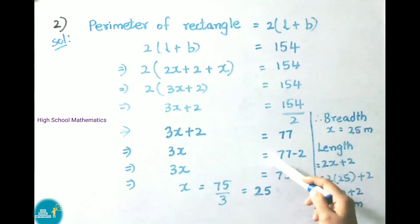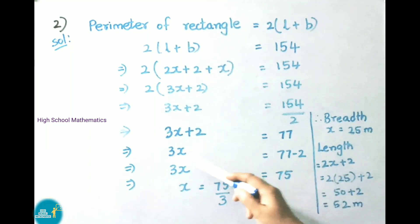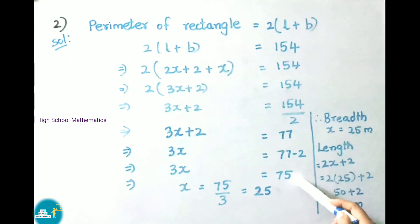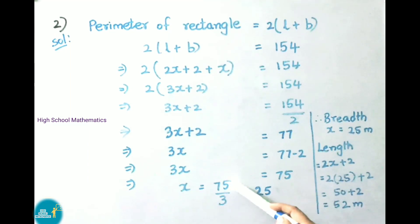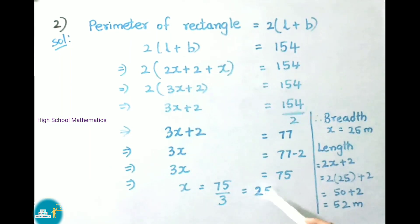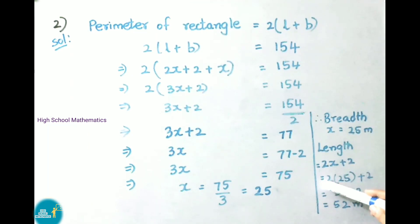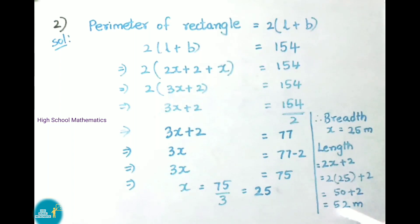That implies 3x equals 77 minus 2, so 3x equals 75. Therefore x equals 75 by 3, which gives x equals 25. So breadth equals 25 meters. Length equals 2x plus 2; substituting x equals 25 gives 2 into 25 plus 2, that is 50 plus 2 equals 52 meters. Therefore length is 52 meters and breadth is 25 meters.